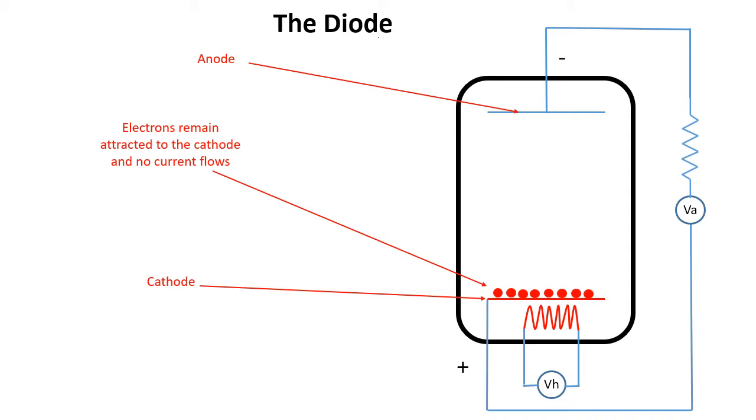Diodes are used in radios where they need to only allow current to flow in one direction. For example, to detect radio signals or to convert alternating current AC to direct current DC. These diodes are also called rectifiers.